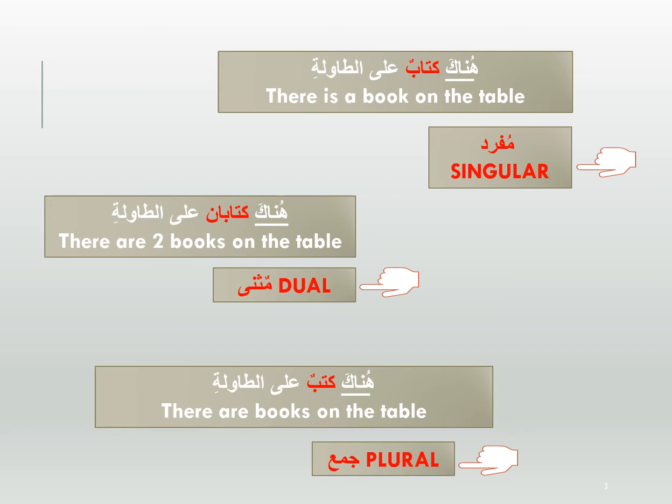Singular, dual, plural. Hunaka Kitabon Ala Attawilati — one book on the table. Hunaka Kitaban Ala Attawilati — two books on the table. Hunaka Kutubon Ala Attawilati — many books on the table. So Hunaka means there is, there are, or over there.